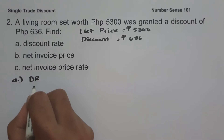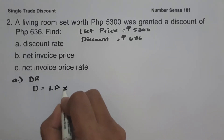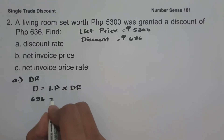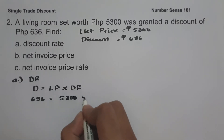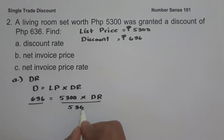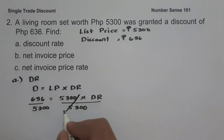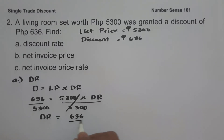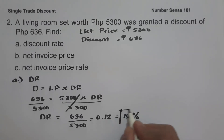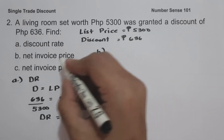On letter A, we are looking for the discount rate. Using the formula: discount equals list price multiplied by discount rate, we have six hundred thirty-six equals five thousand three hundred multiplied by the discount rate. To simplify, divide both sides by five thousand three hundred. So the discount rate equals six hundred thirty-six divided by five thousand three hundred, which is zero point twelve, or twelve percent. This is our discount rate.